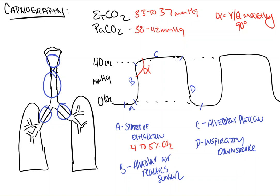Now, between sections C and D, of course, there is another angle, and this is called the beta angle. Just like the alpha angle, it should be 90 degrees, but if it's greater than 90 degrees, it represents re-breathing of CO2. And you can see this in pathologies such as laryngospasm or airway obstruction.